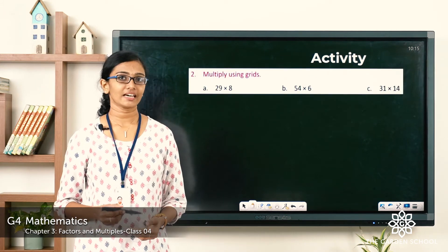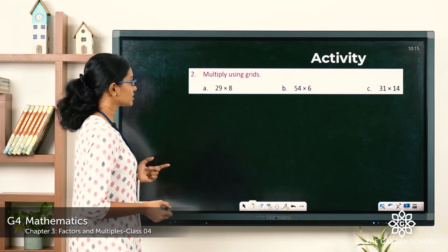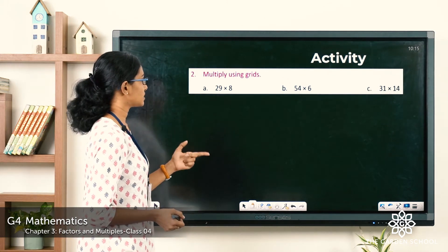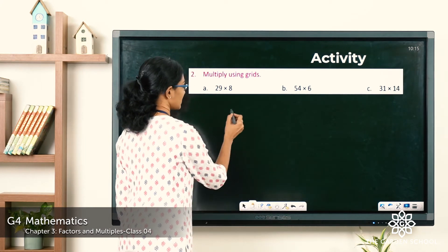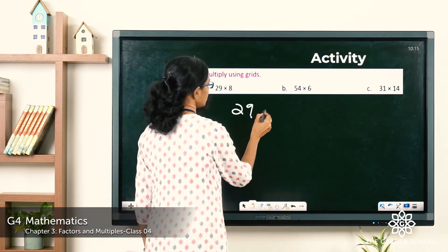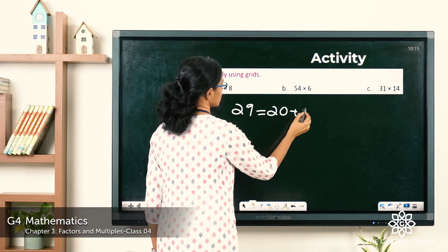Hope you have done that activity. Now let's see the answers. The first question, 29 into 8. Let's see how we can split 29. 29 can be split into 20 plus 9.